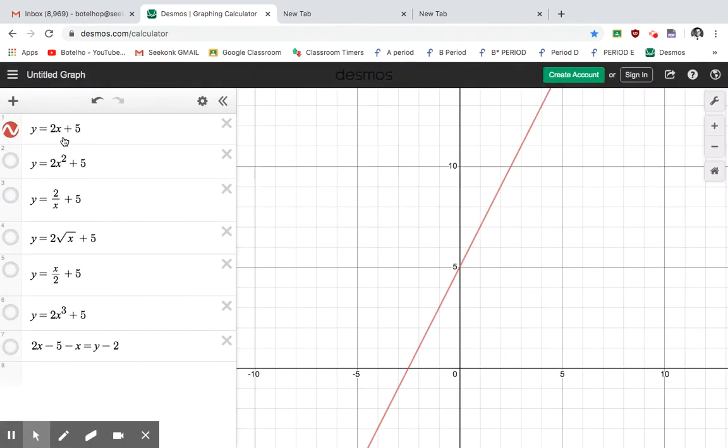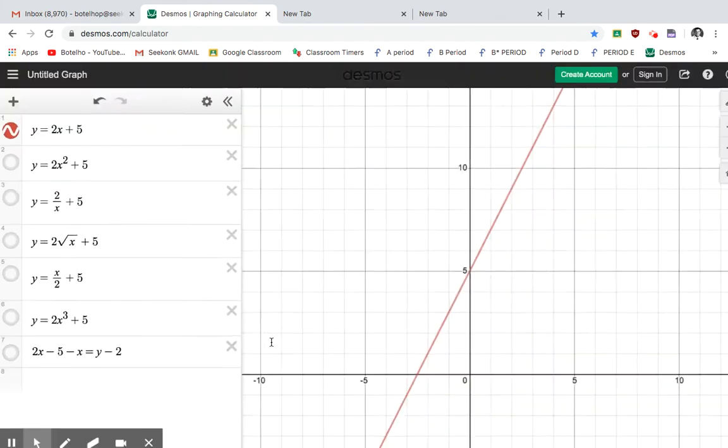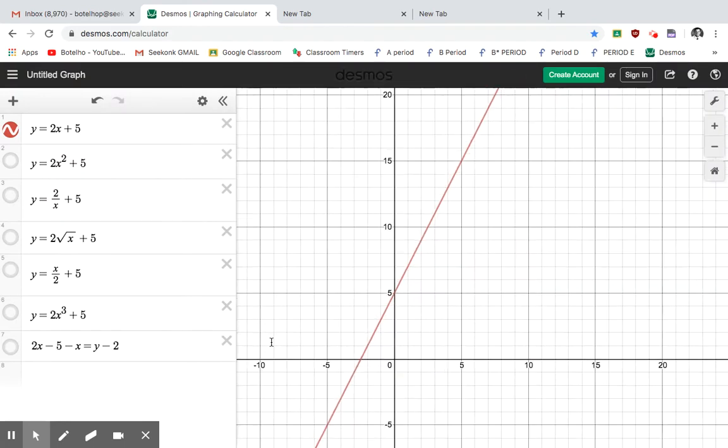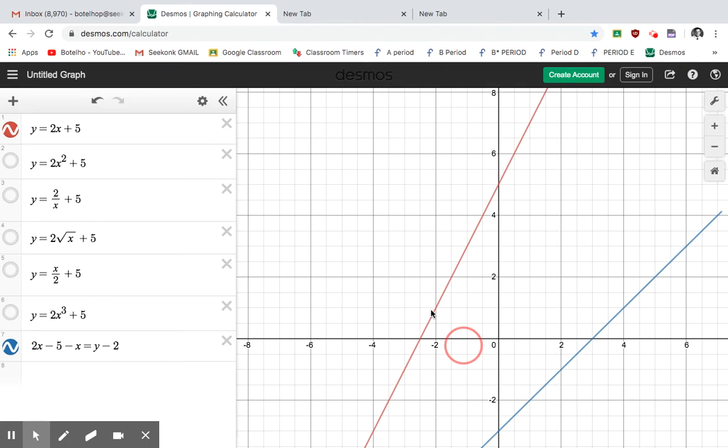But sometimes it might even look a little stranger. If I look at number 7 down here, this equation, it doesn't look like mx plus b, but notice none of the x's are to an exponent. So then if I go to graph it and I just highlight it, it gives me another straight line here in blue. So it's technically linear.